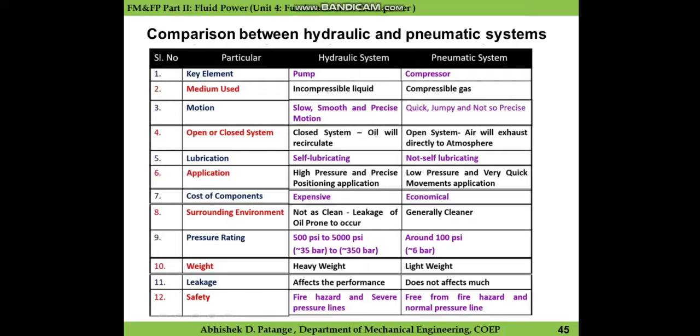On the other hand, since gas is compressible, the motion in a pneumatic system is quick, jumpy, and tends to produce noise — that is why it is not precise. If you find any pneumatic system, you will always find noise involved in it, because the medium used is air or compressible gases.